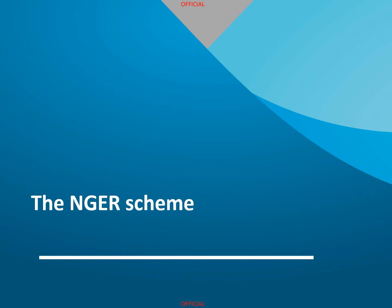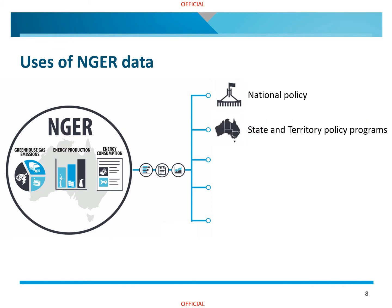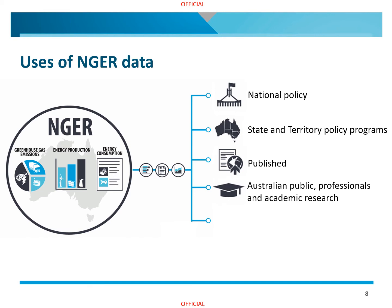In the second half of this video, we will discuss the NGER scheme and the basics of NGER reporting obligations. The NGER scheme is administered by us, the Clean Energy Regulator. The NGER scheme was established in 2007 as a single national framework for reporting data on greenhouse gas emissions, energy production, energy consumption and other information specified under the NGER legislation. By collecting a single consistent data set, we are able to avoid duplicated reporting requirements. Data collected under the NGER scheme is critically used to inform national policy and state and territory policy programs and activities. Some of the data that is reported is also published on our website, which informs the Australian public, professionals and academic research.